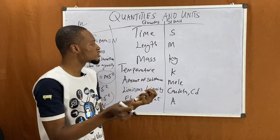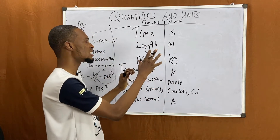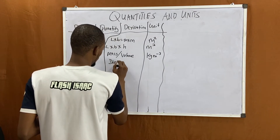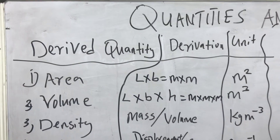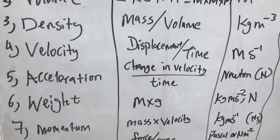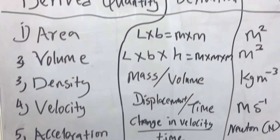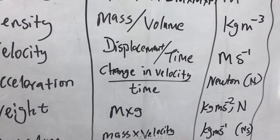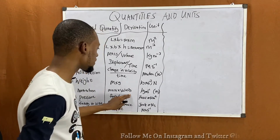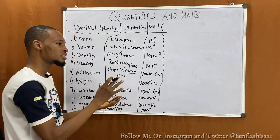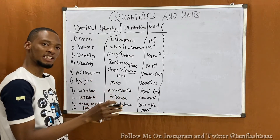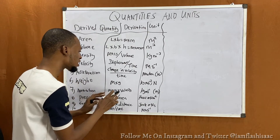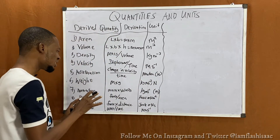When you combine fundamental quantities and their units, you get derived quantities and units. Let me now summarize the derived quantities in a table. Momentum is mass times velocity: mass is in kilograms, velocity is distance over time (m/s), so momentum has the unit kilogram meter per second (kg·m/s).